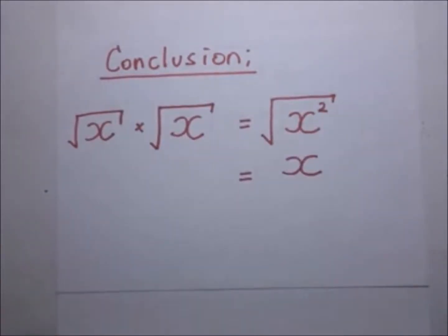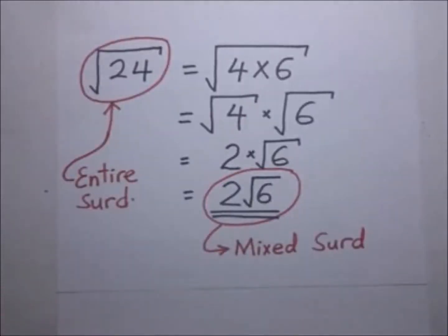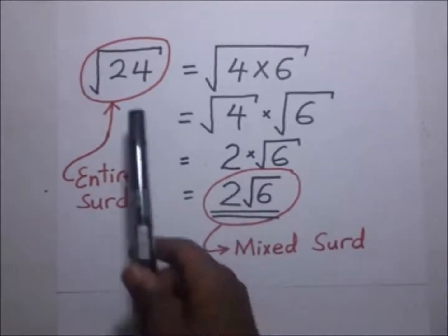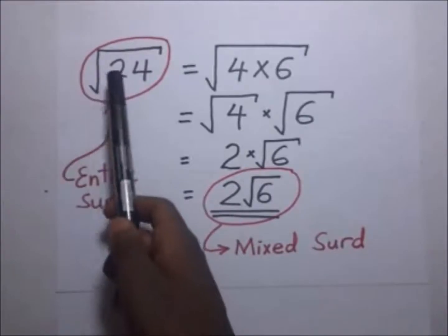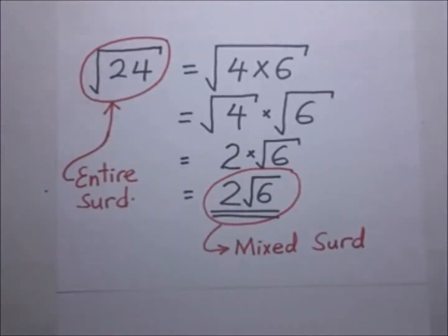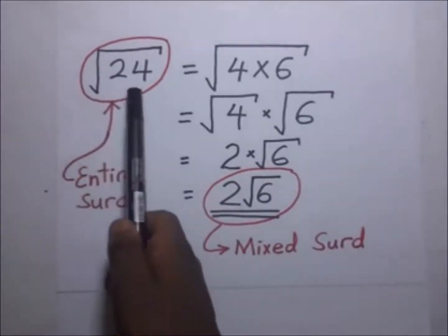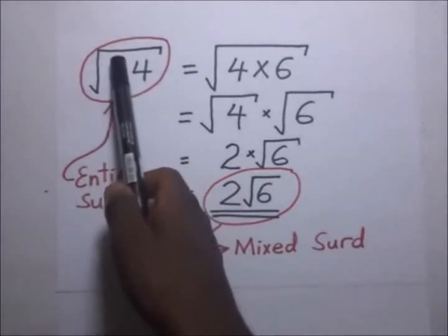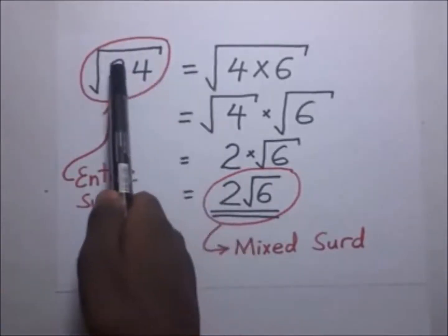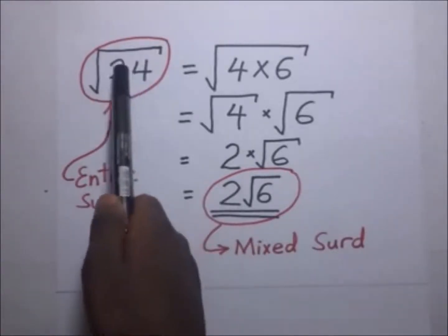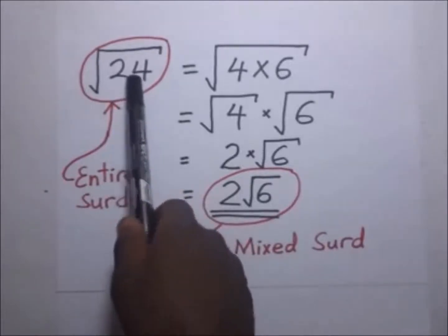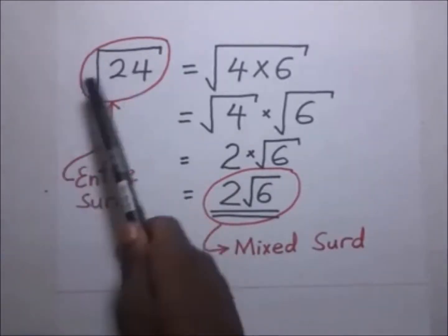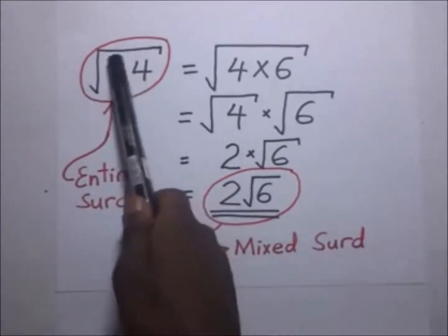With that brief background information, let's get on to simplifying surds. In most cases, we are given an entire surd such as the square root of 24, and we are supposed to simplify it. In the process of simplification, we need to first split the number into its factors. For 24, we have factors such as 2×12, 3×8, and 4×6.